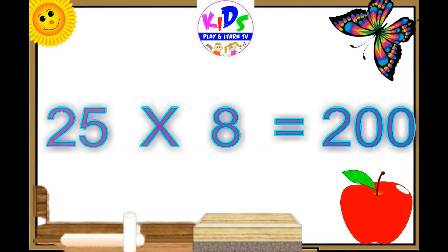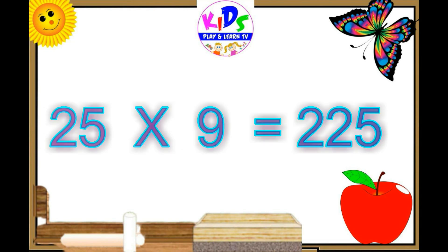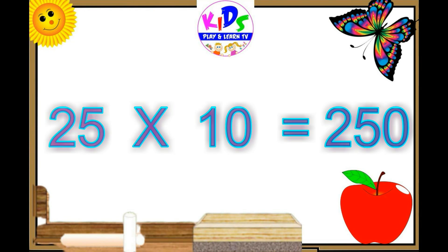25 eights are 200, 25 nines are 225, 25 tens are 250.